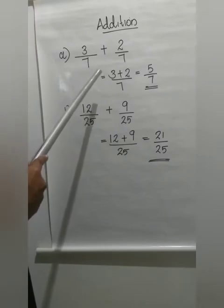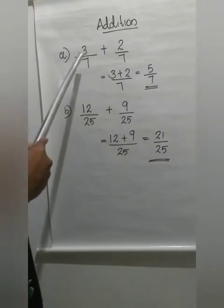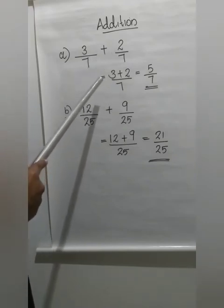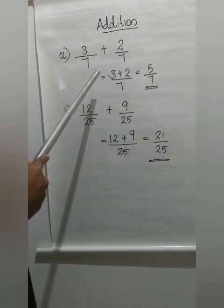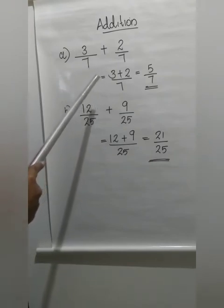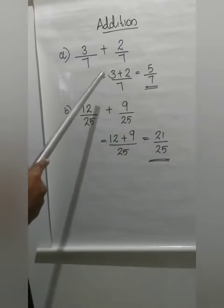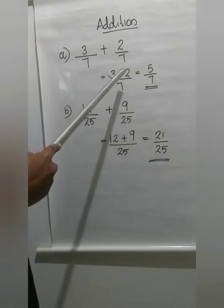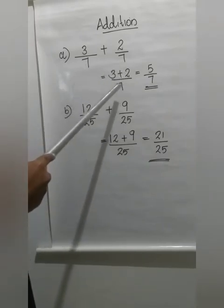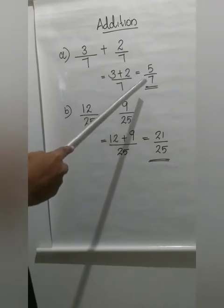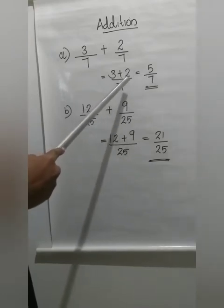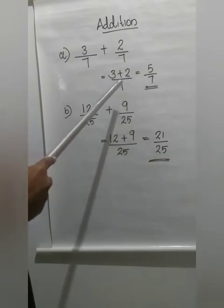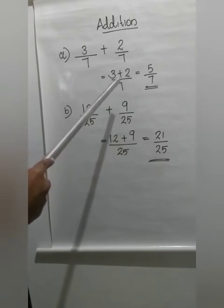We are adding only the numerators. Here, 3 by 7 plus 2 by 7 — it is already a like fraction, so no need of converting. We can add it directly. Adding directly means we are only adding the numerators: 3 and 2, so 3 plus 2. The denominator is written as such — 7 itself. So the answer is 3 plus 2 equals 5, and the denominator stays the same: 5 by 7. Never add the denominators. Only add the numerators.